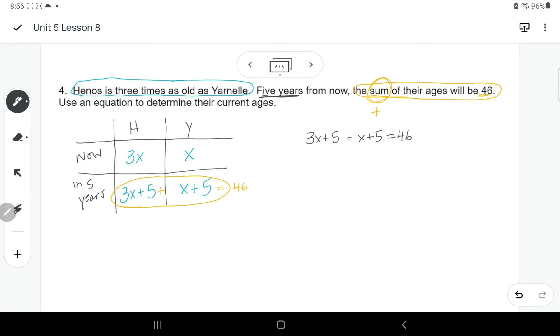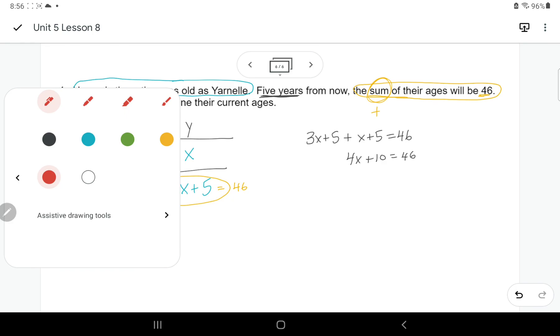So we'll have 3X plus 5 plus X plus 5 equals 46. Then we're going to gather these up and simplify. So here I get 4X plus 10 equals 46. Opposite operations.